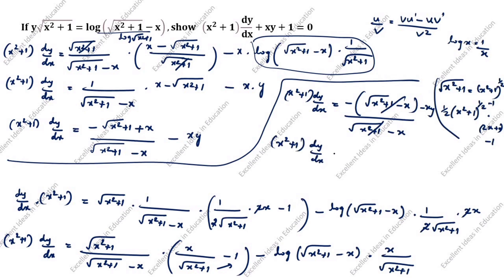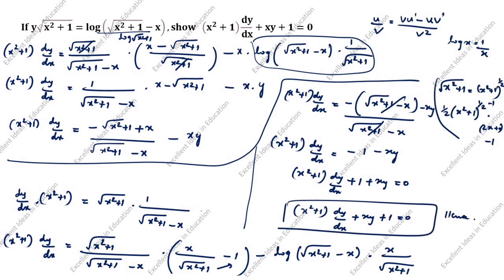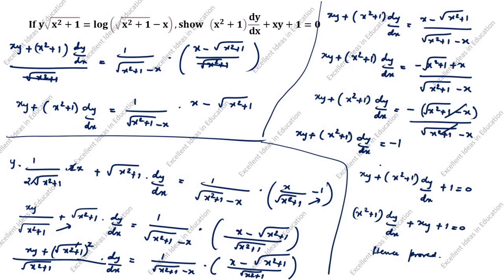(x²+1) dy/dx = −1 − xy. Bringing terms to the left: (x²+1) dy/dx + xy + 1 = 0. Hence proved. This is the second method using the quotient rule. The first method uses the product rule. You can follow whichever is easiest for you. Thanks for watching this video.